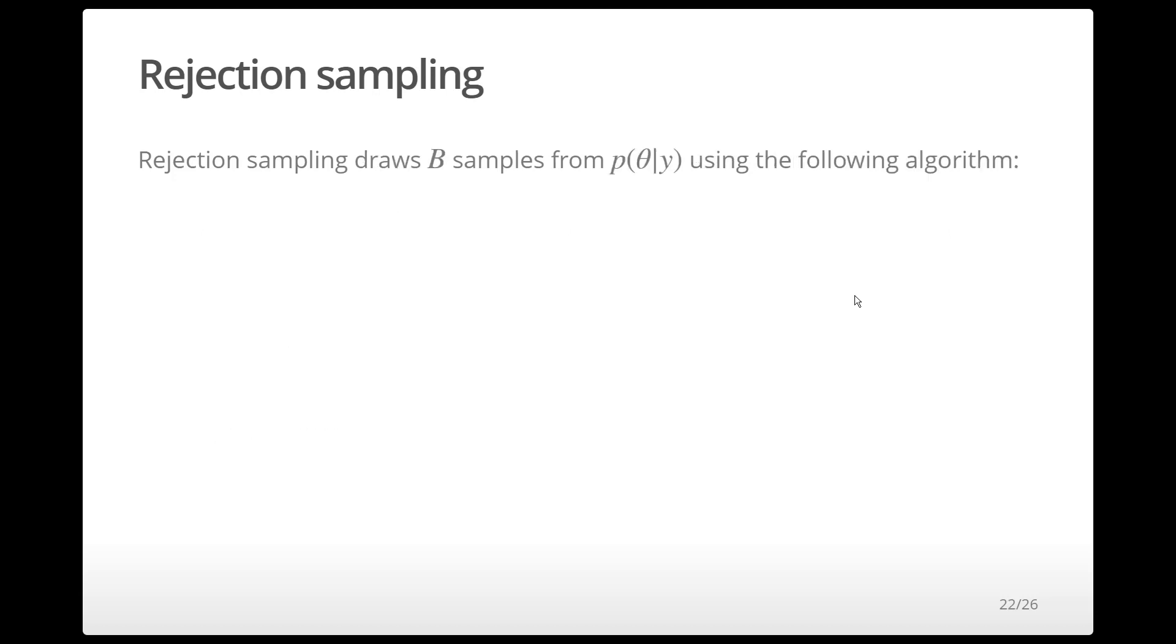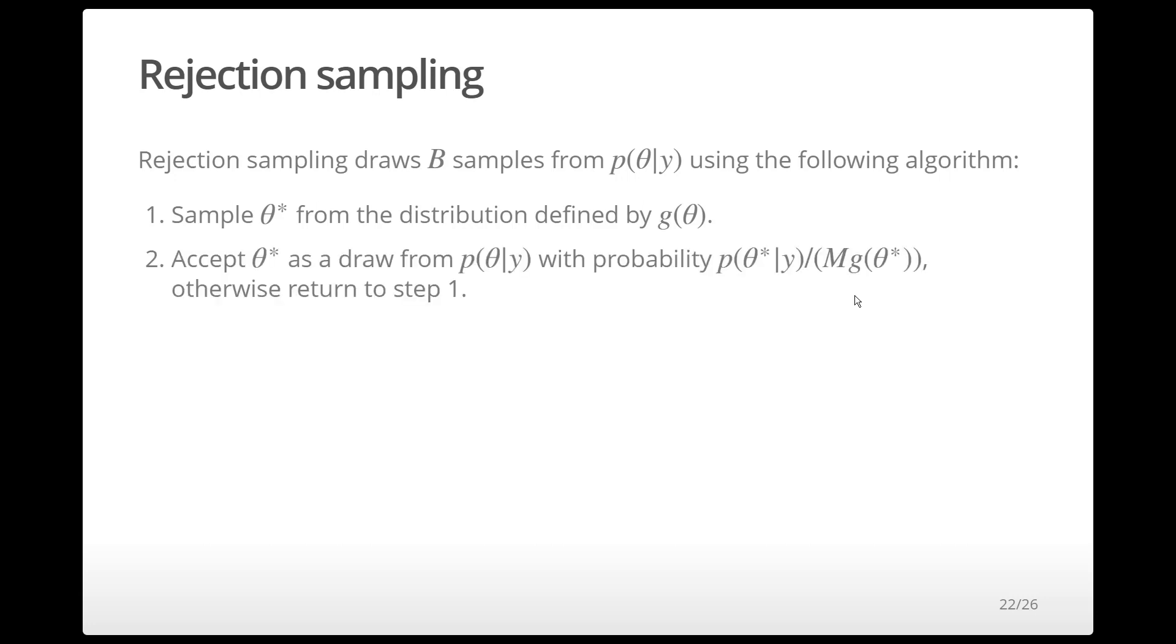The implementation of the rejection sampling algorithm only involves a few steps. Step 1 is draw a value theta star from g. Step 2, accept theta star as coming from p with probability p divided by mg, where p and g are evaluated at theta star.